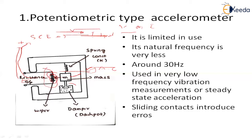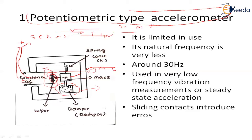A damper is used here. Damping is provided either by filling the space with a viscous liquid or by using an oil dashpot. This potentiometric type accelerometer is simple in construction. However, it is limited in use because its natural frequency is very low — around 30 Hz only. For this reason, it is used only in low frequency vibration measurements.